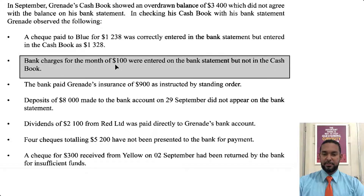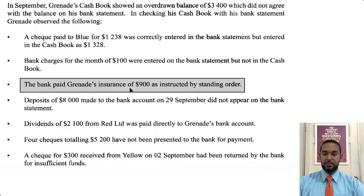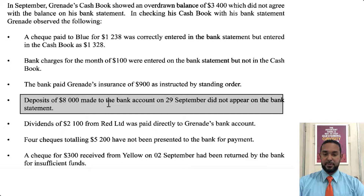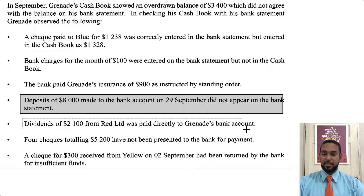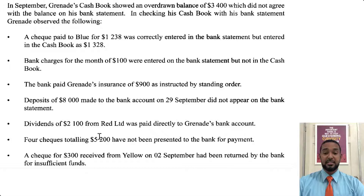Bank charges for the month of 100 were entered on the bank statement but not in the cash book, so we're going to put that in the cash book. The bank paid Grenade's insurance of 900 as instructed by standing order — a standing order will be present in the bank statement but not in the cash book. Deposits of 8,000 made to the bank on 29 September did not appear on the bank statement — that's a bank lodgement going in the bank reconciliation statement. Dividends of 2,100 from Red Limited were paid directly into Grenade's bank account, so that's a direct deposit to be included in the updated cash book.